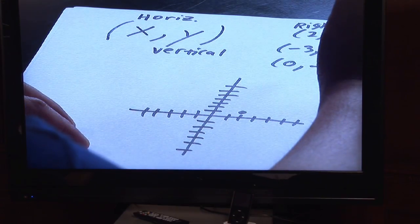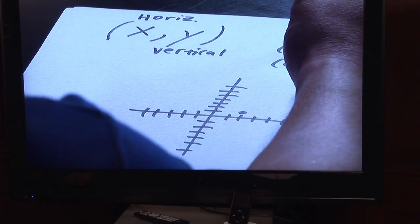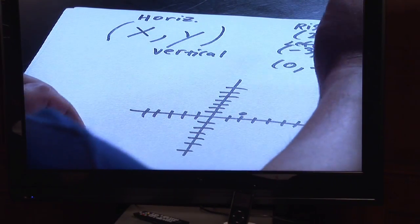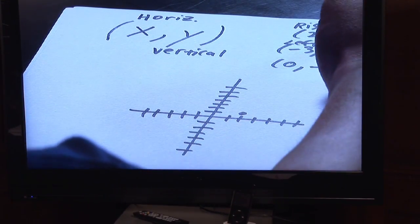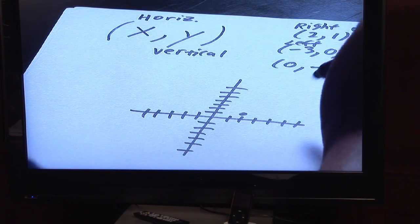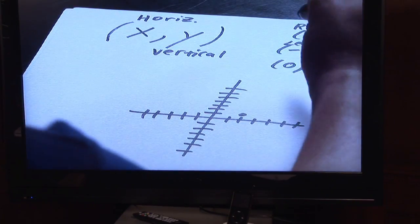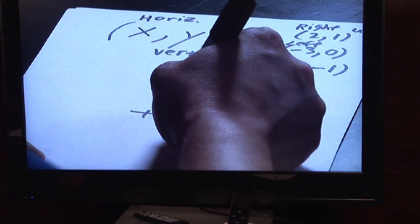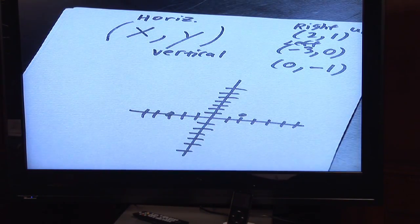With negative three, zero, the negative three, which is the X, tells you to go left three, but the zero, whenever you see a zero for the Y, that means it doesn't go vertically. That means once you go to the left three, you stay put. So from here, one, two, three, that's the location of your second point.